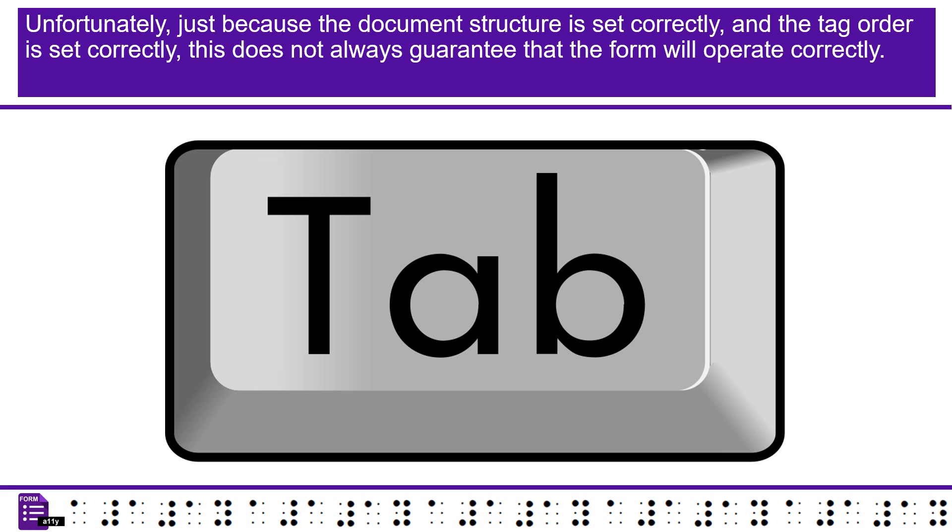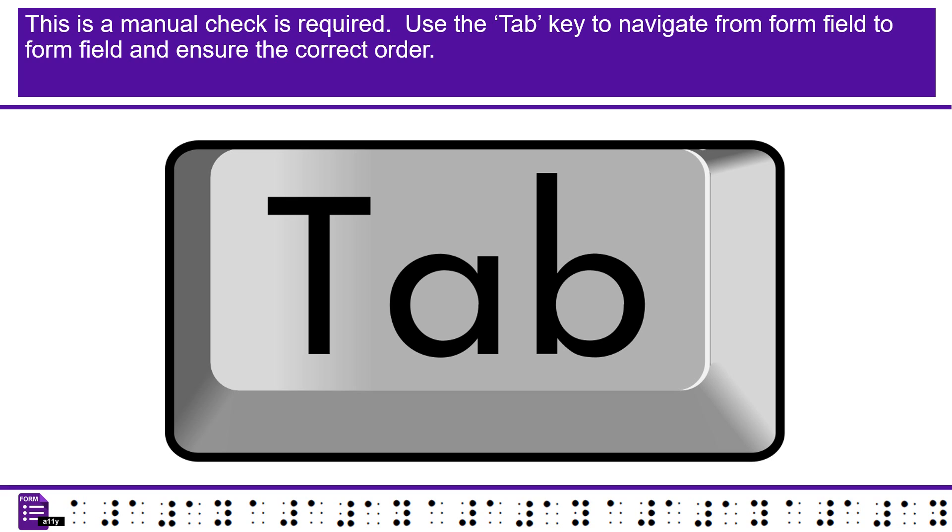Unfortunately, just because the document structure is set correctly and the tag order is set correctly, this does not always guarantee that the form will operate correctly. This is why a manual check is required. Use the tab key to navigate from form field to form field and ensure the correct order.